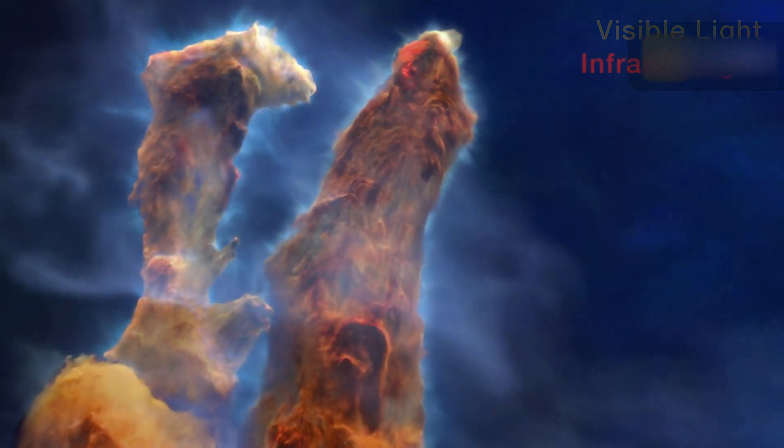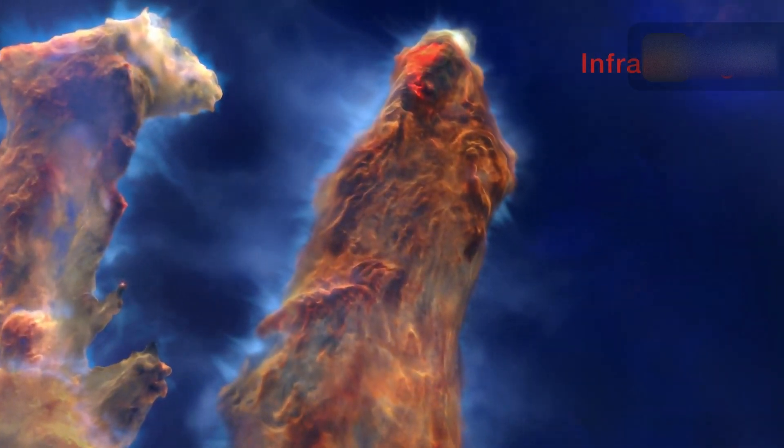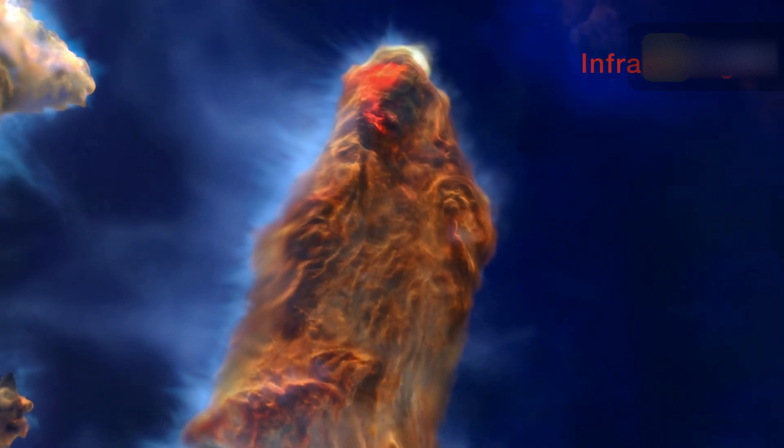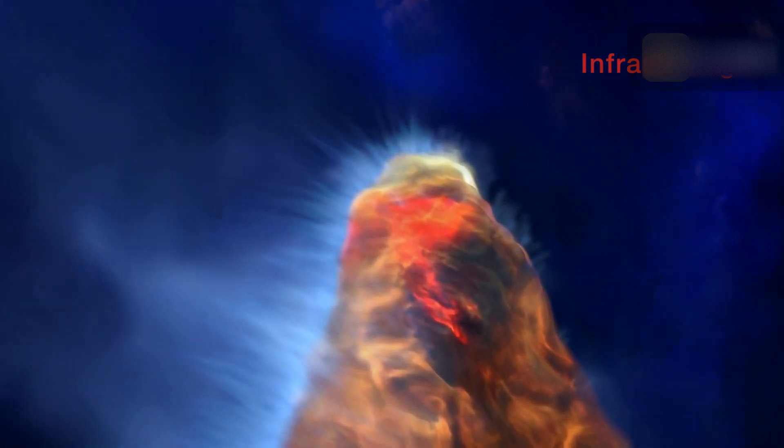At hundreds of degrees, Hubble observes objects that glow in visible light. Webb's infrared vision sees through obscuring dust to reveal stars embedded in the Pillars. This vision is sensitive to objects that are only hundreds of degrees in temperature.